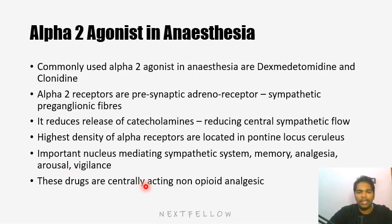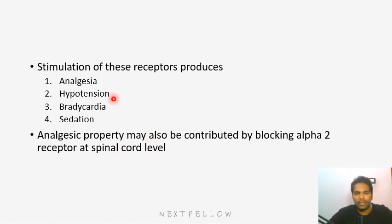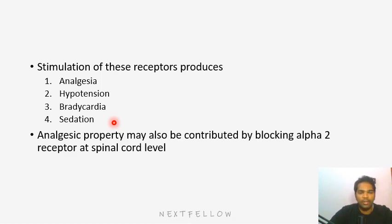These drugs are also called centrally acting non-opioid analgesics. The stimulation of these receptors — that is, inhibition of this nucleus — will produce analgesia, hypotension, bradycardia, and sedation. We saw that the function of this nucleus is controlling sympathetic nervous system, arousal, vigilance and maintenance of analgesia. When you suppress the sympathetic nervous system, you will definitely get hypotension as well as bradycardia — that is seen with these drugs.